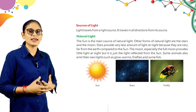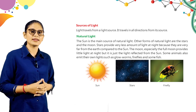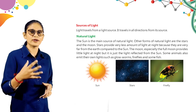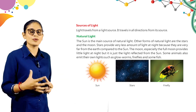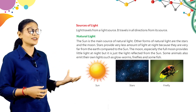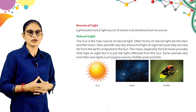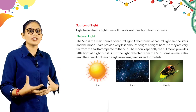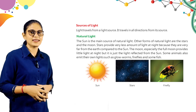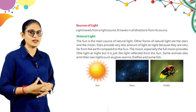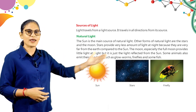Natural source means light that we get naturally. The main natural source is the sun — it is the most important and main source of light. Other sources include stars and the moon. Stars are very far from us, that's why the light from stars reaches us in very small amounts. Some animals also have their own light, like glow worms, fireflies, and some fishes. Look at this picture — sun, star, firefly.